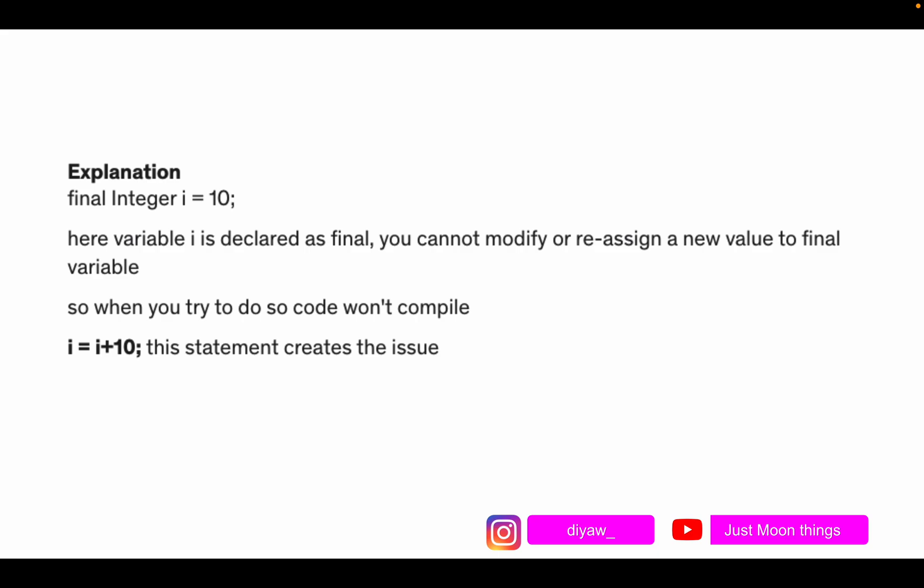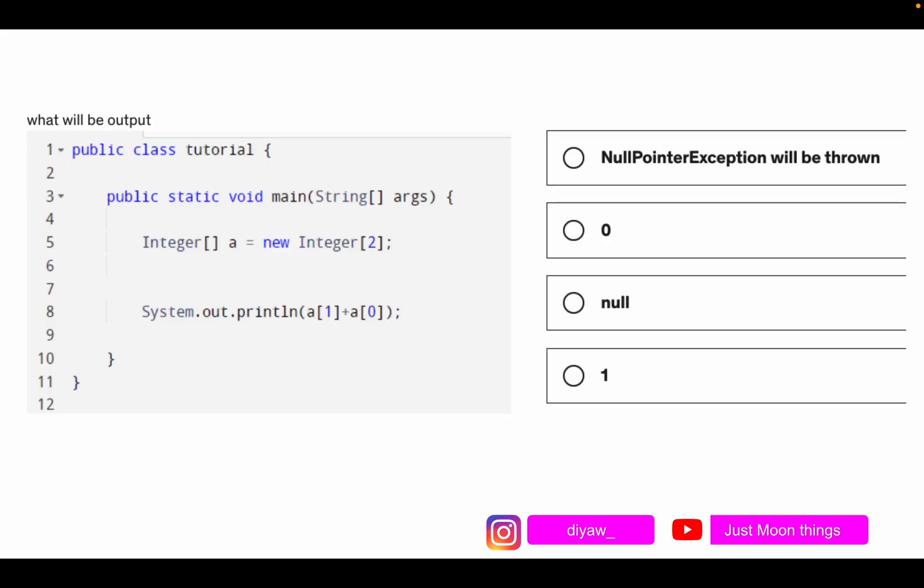Here again is the explanation if you want to read it again. Then we have another question that says what will be the output. Again we have a code over here and we have four options and we have to decide the best answer. We'll start with the question. The question has a main method, then we are trying to create an array of type integer.